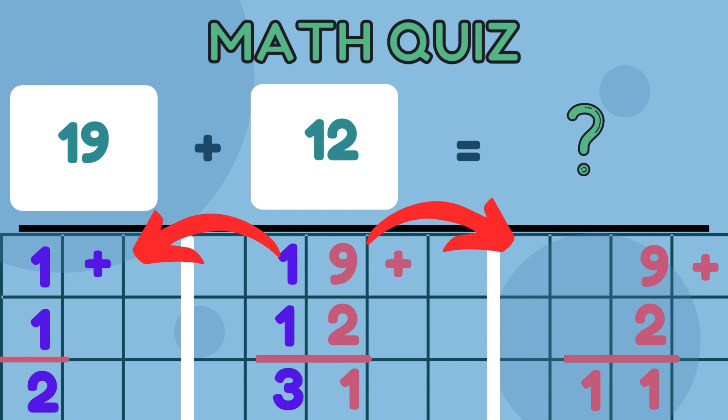Add the digits in each column. 4. If the sum in a column is 10 or more, carry over the extra digit to the next column. 5. Write the final sum below the line.